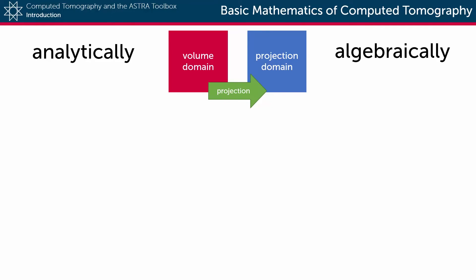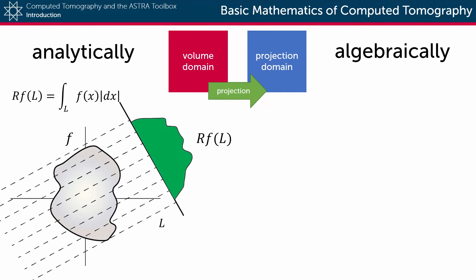In the analytical approach, a forward projection is defined as a series of line integrals over the function in the volume domain. For each projection and for each detector point, a line is cast through the volume, and at each point on that line, the contribution of the function is summed up.